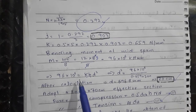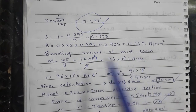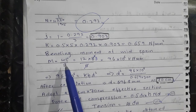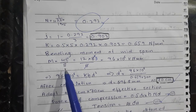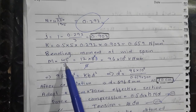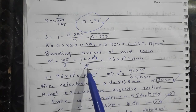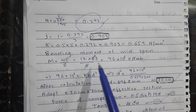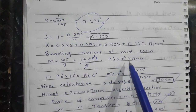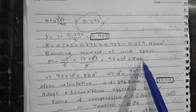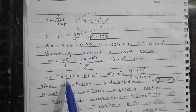Now we find the bending moment acting on this simply supported beam. Moment M = w × L² / 8, so M = 12 × 8² / 8 = 12 × 8 = 96 kilonewton·meter, which equals 96 × 10⁶ N·mm.